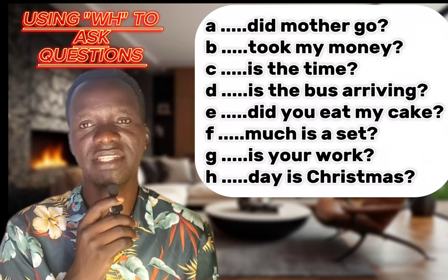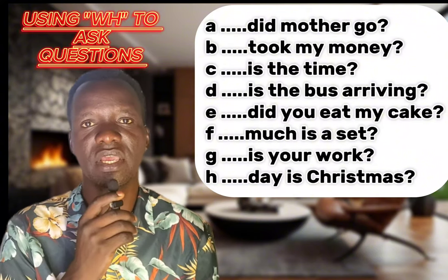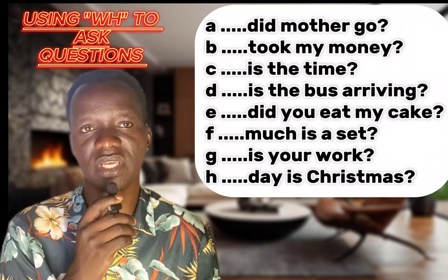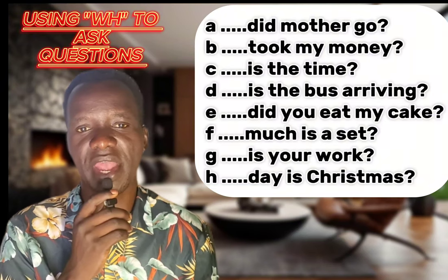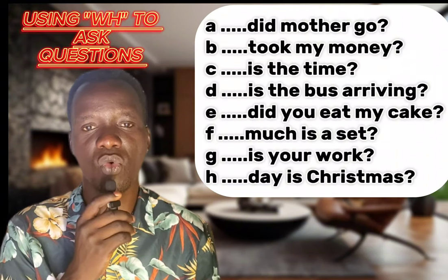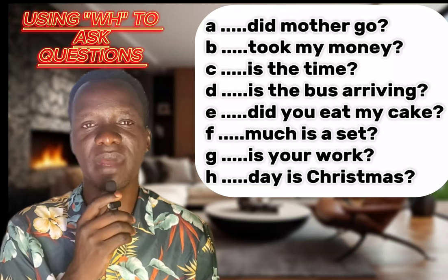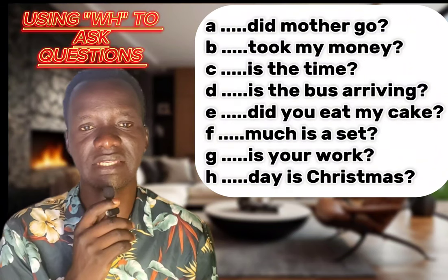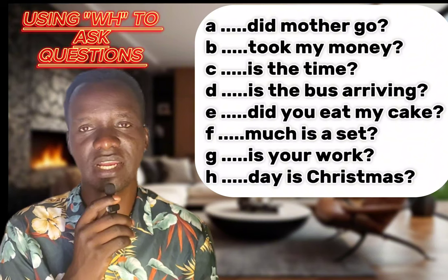Let's start with 'where.' Where is used to ask about place — any place. If you want to ask about any place, you will use 'where.' For example: 'Where are you going?' or 'Where do you stay?' It's straightforward — anything concerning place, you use 'where.'